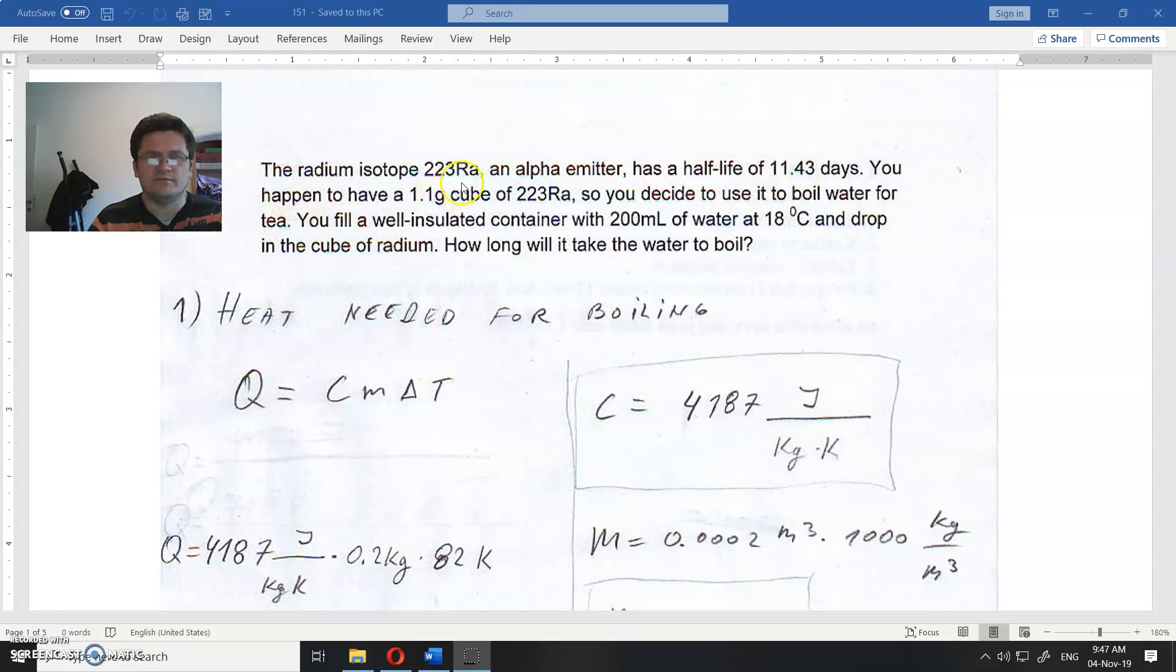The radium isotope Ra-223, an alpha emitter, has a half-life of 11.43 days. If you happen to have a 1.1 gram cube of radium, you decide to use it to boil water for tea. You fill a well-insulated container with 200 milliliters of water at 18°C.